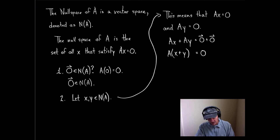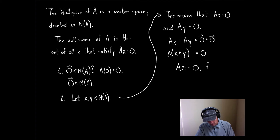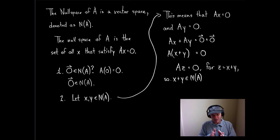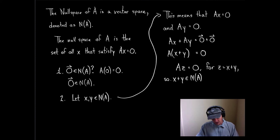What did I just show? I showed that A times (x + y) equals 0, so if we call z = x + y, then Az = 0. That means x + y is in the null space. When you took x and y and added them together, you got another vector, and that vector also has to be in the null space.